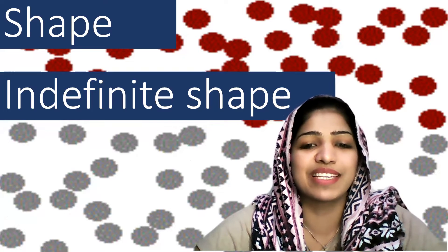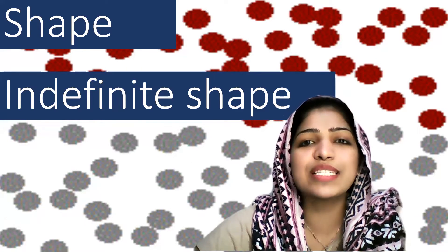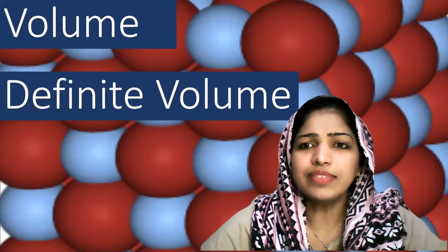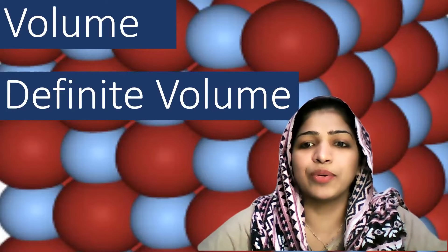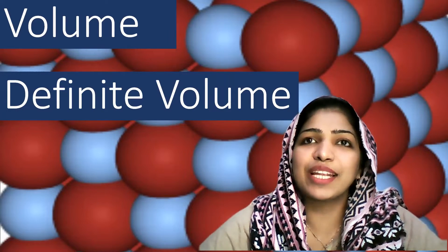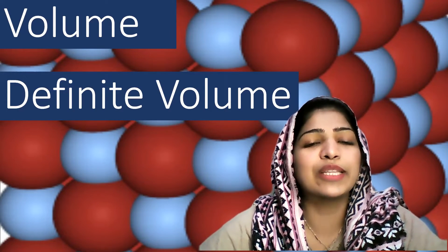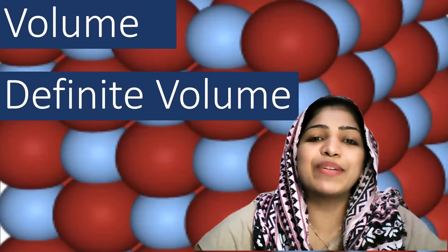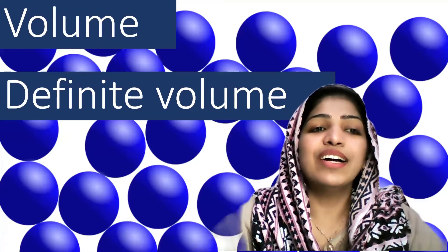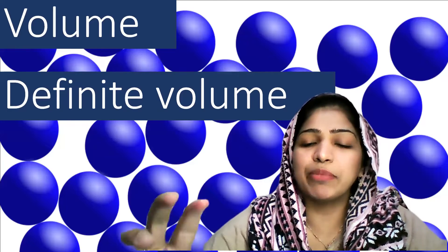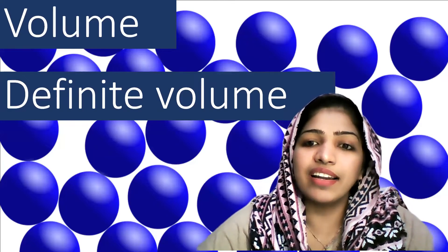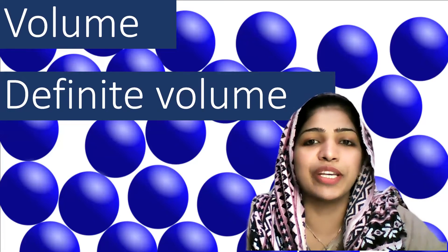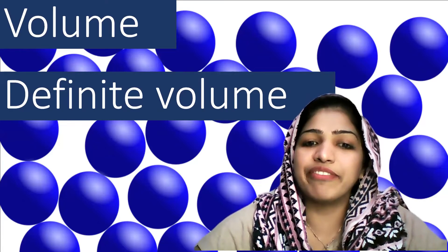So we have learned the physical property of shape: only solids have a definite shape. Now about volume — solids have a definite volume; they have a fixed length, size, and height. Liquids also have a definite volume. If we have a liquid in a glass and change the container, it takes a different shape but the volume remains the same. That is why liquids have a definite volume.